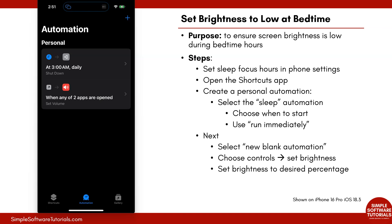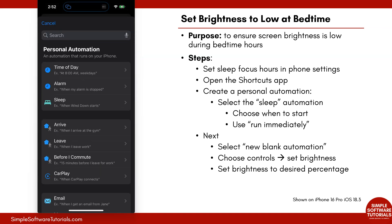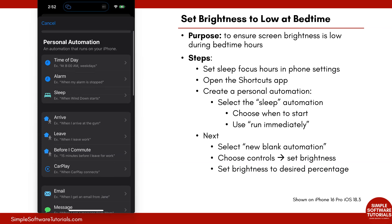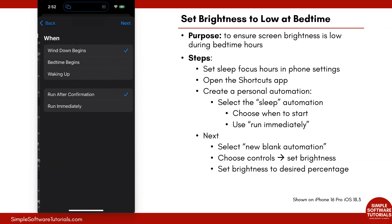From here, we want to create a new personal automation. Tap the plus sign in the top right. Then we want to locate the Sleep automation — you can search in the search bar or just scroll down, it's right at the top. Tap on Sleep.